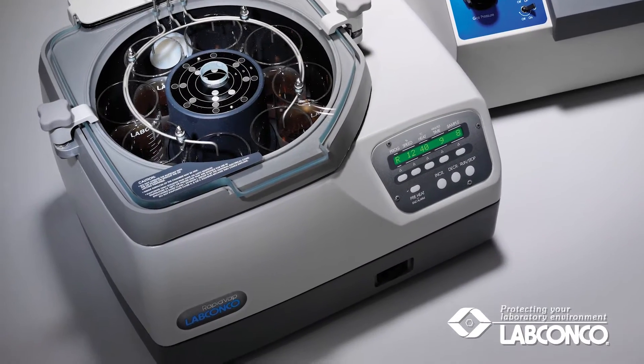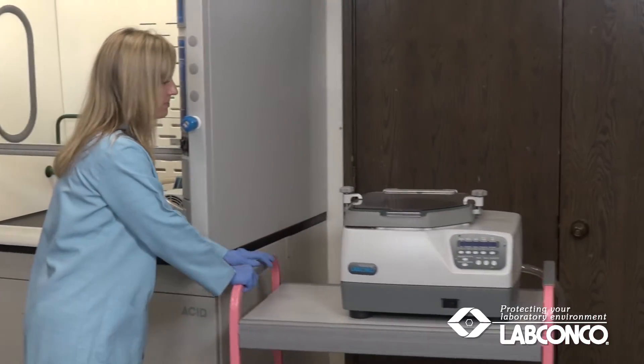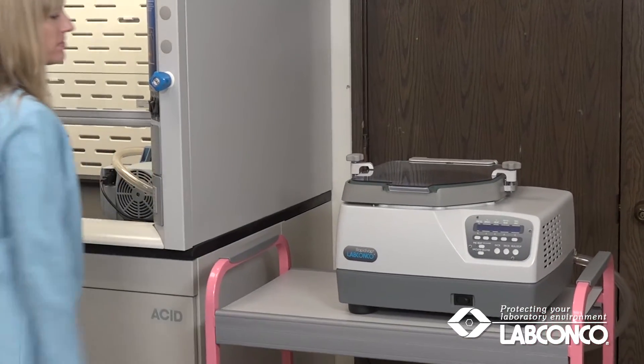Before installing your RapidVap vacuum concentrator, prepare a space for it. It should be located near a fume hood if solvents are used.